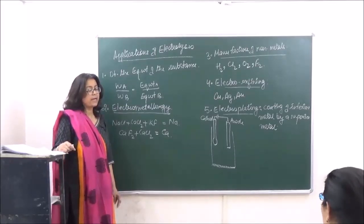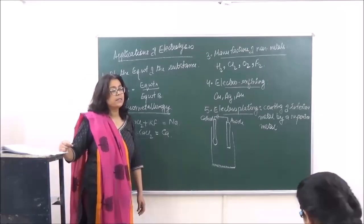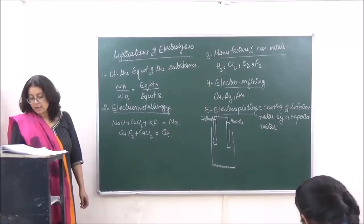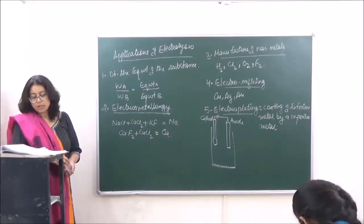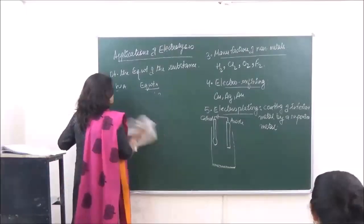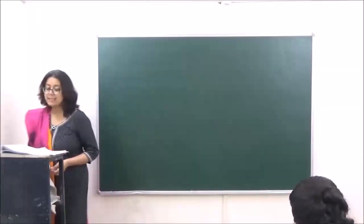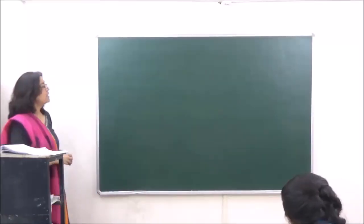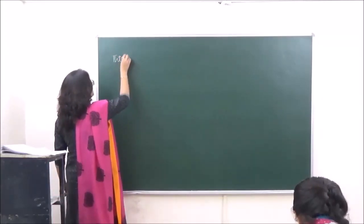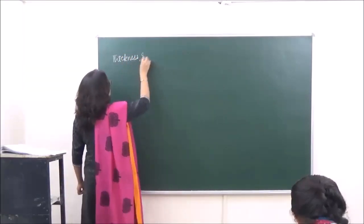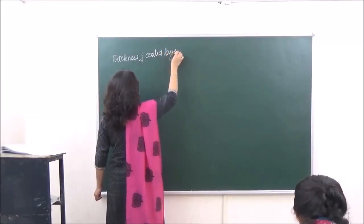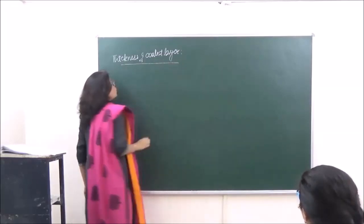Galvanization means coating a piece of iron with zinc. Another important concept is calculating the thickness of the metal deposited — that is, calculating the thickness of the coated layer.